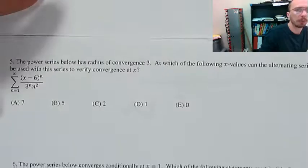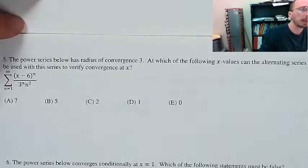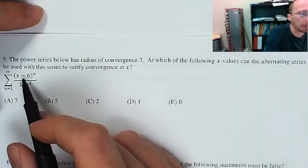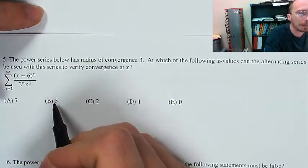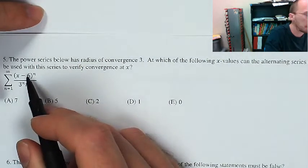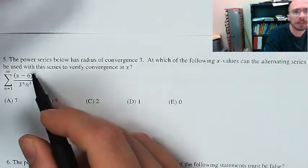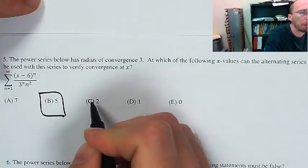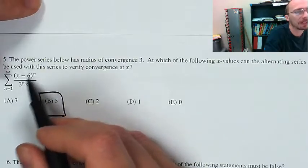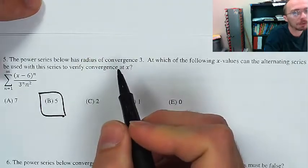This power series has radius of convergence equal to 3. At which of the following x values can the alternating series test be used to verify convergence? It's not going to be anything bigger than 6, because if it's bigger than 6, it's not even an alternating series. It's got to be 5, because 5 minus 6 is negative 1 to the n — that makes it an alternating series. What's wrong with 2? 2 minus 6 is negative 4 to the n over 3 to the n — that's going to be too powerful on top, causing it to diverge. It's also outside of the radius of convergence.